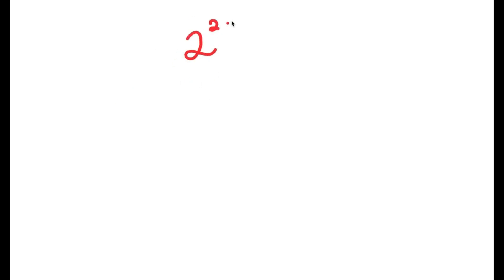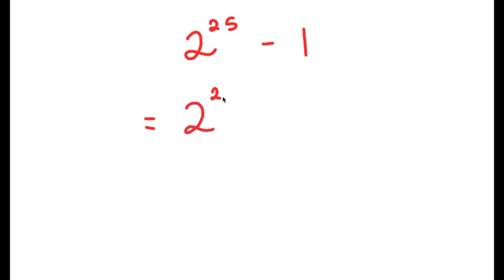In this video, I'm going to solve the problem 2 to the power of 25 minus 1. To start, I'm going to rewrite 2 to the power of 25 as 2 to the power of 24 plus 1, and then we have our minus 1 at the end.